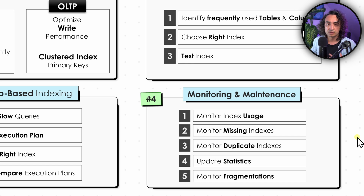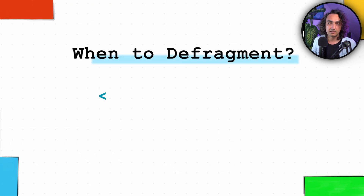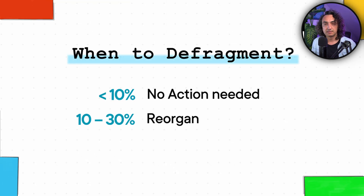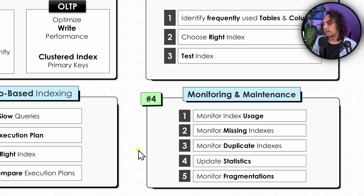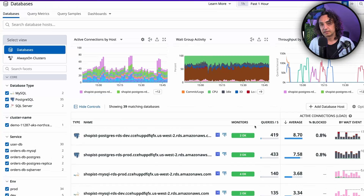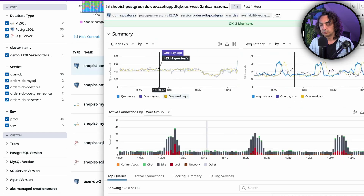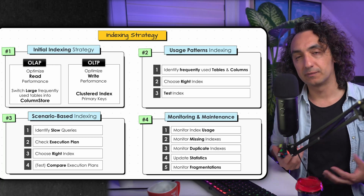Finally, monitor index fragmentation. Over time, as modifications are made to tables, the order of data pages can become wrong or free spaces appear that are not used. Monitor the fragmentation percentage for each table: if it is between 0% and 10%, there is no issue; between 10% and 30%, go and reorganize the index; above 30%, rebuild the whole index. For monitoring, I usually build automated dashboards in Power BI or Tableau, extracting all this metadata to monitor database health, or use advanced third-party tools.